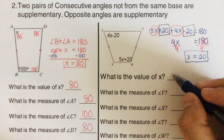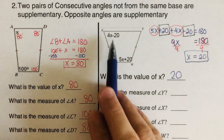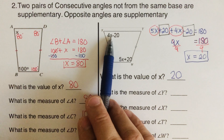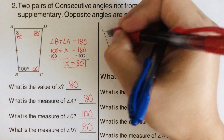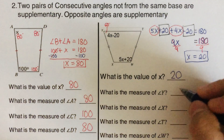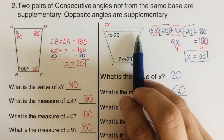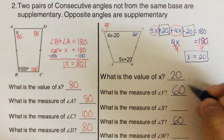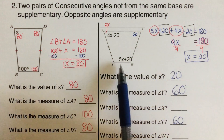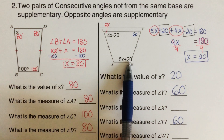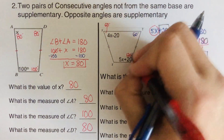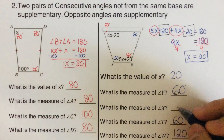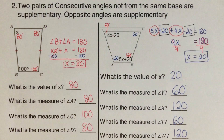With x equals 20, angle Y is 4 times 20 minus 20, which is 80 minus 20 equals 60 degrees. Since they are base angles, angle T is also 60 degrees. Angle W is 5 times 20 plus 20, which is 100 plus 20 equals 120 degrees, and its base angle partner is also 120 degrees. Adding 60, 60, 120, and 120 gives 360 degrees.